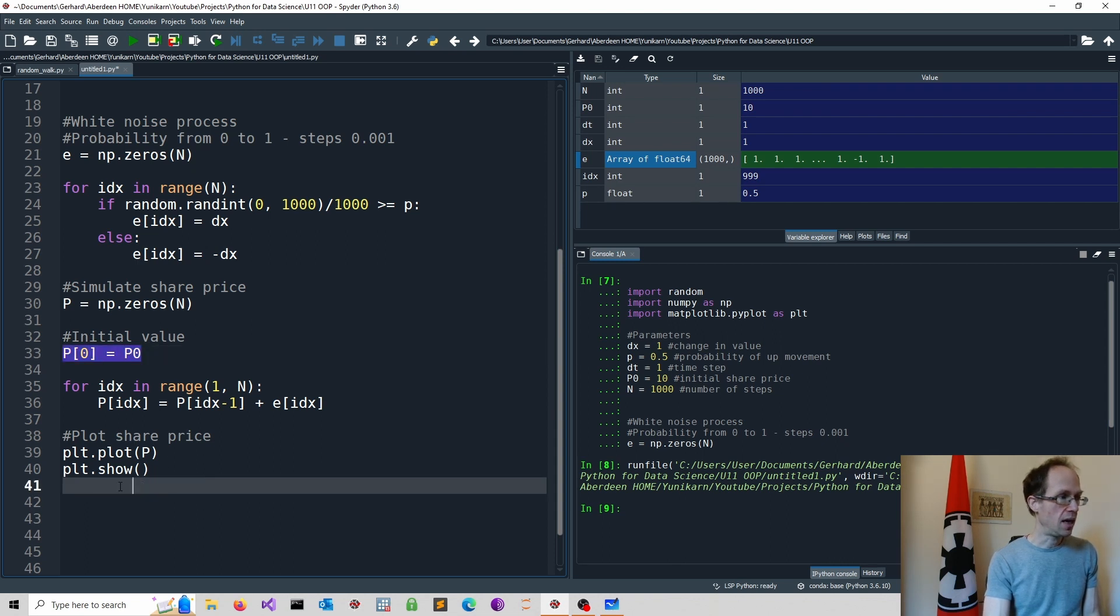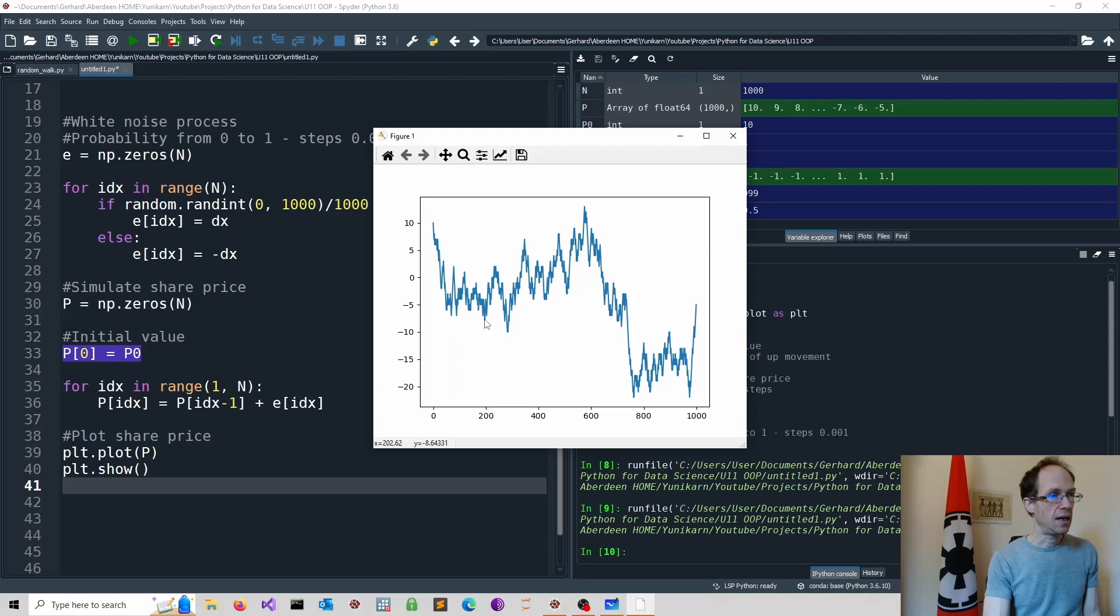And as you can see, we now have a lovely random walk starting at 10 and then bouncing about. So that's pretty good. So now you know how to simulate a random walk in Python. I see you in the next one.